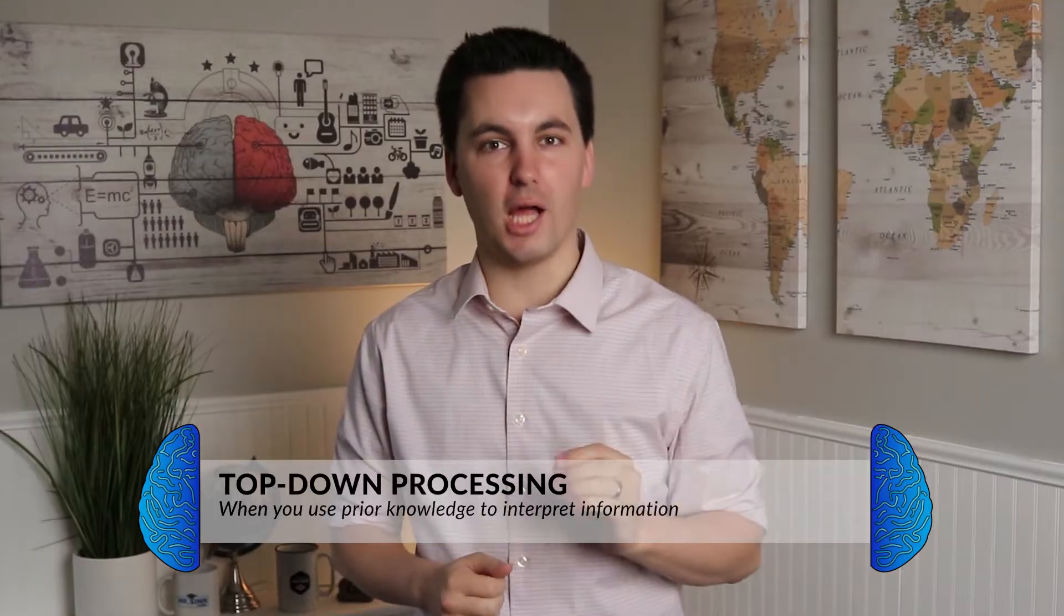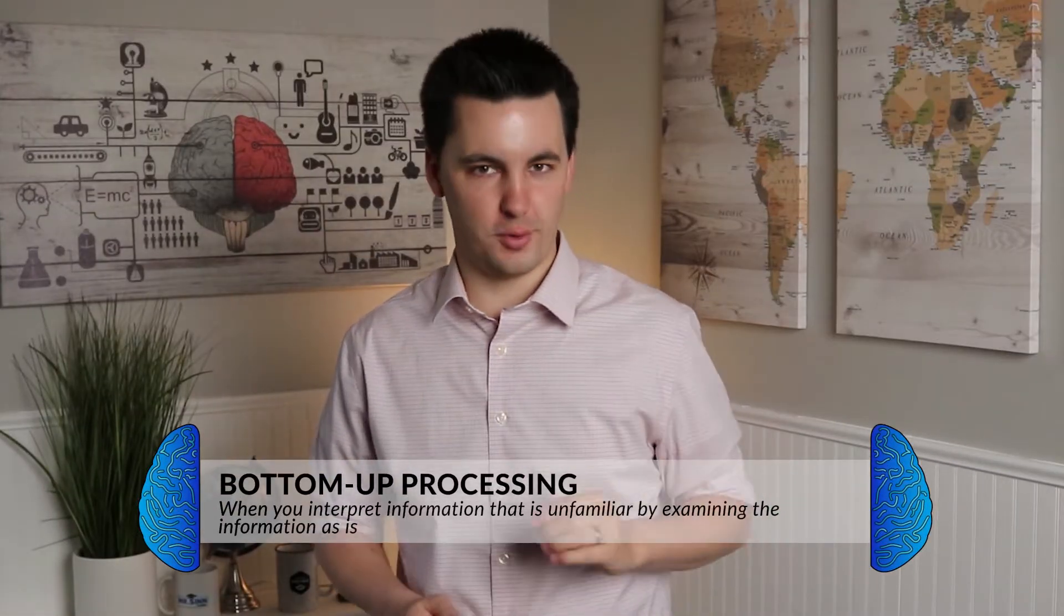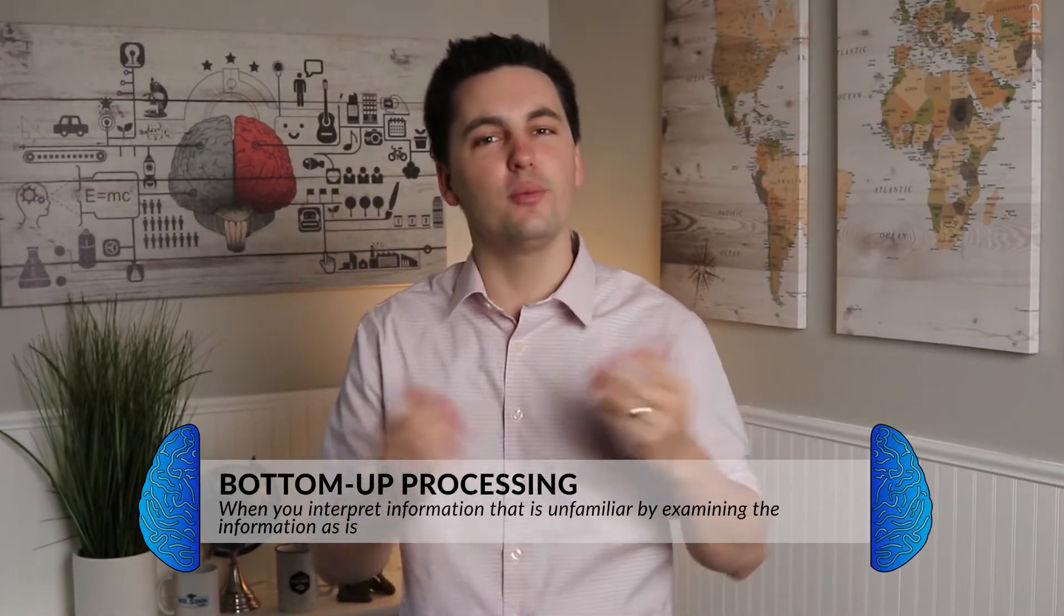Top-down processing is when you use prior knowledge to interpret new information. Oftentimes this new information is familiar to you and it's not very complicated. While bottom-up processing is when you interpret information that is complex or unfamiliar to you. You process information by taking in the incoming stimuli and organize it as it comes.